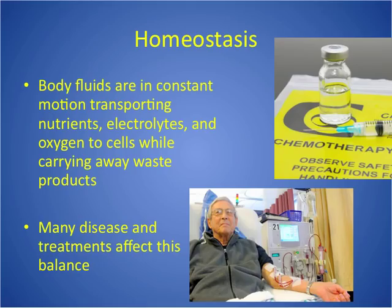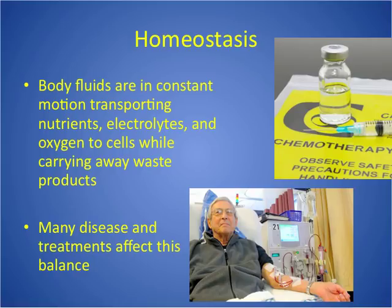Homeostasis really means constant stability. Our human body works best when some conditions are kept within a really narrow range of normal — things like our temperature, electrolytes, pH, blood volume. Our body has mechanisms in place to control homeostasis, such as sweating and vessel dilation when we're in hot temperatures. In terms of fluid volume and composition, homeostasis is very important because the amount of water or electrolytes affects the functioning of all cells, tissues, and organs. Body fluids are in constant motion, transporting nutrients, electrolytes, and oxygen to cells while carrying away waste products.